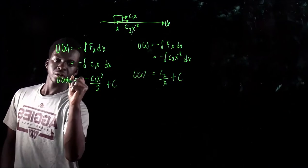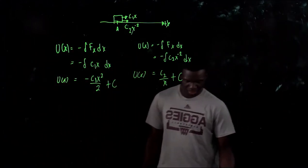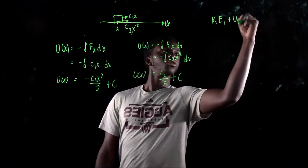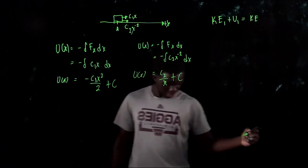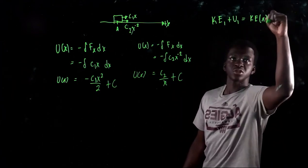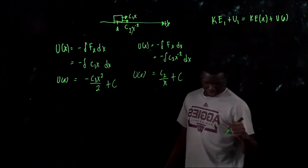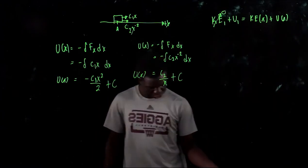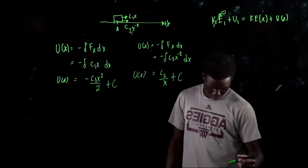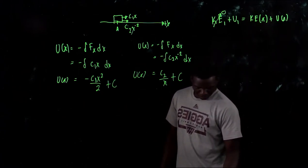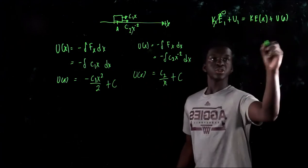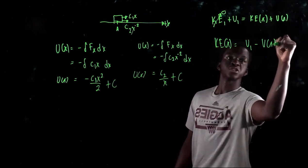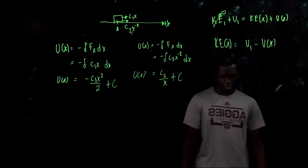The fact that we can find a potential energy function proves the forces are conservative. To find the kinetic energy as a function of x, we use conservation of energy: KE1 plus U1 equals KE(x) plus U(x). Since the object starts at rest, KE1 equals zero. So KE(x) equals U1 minus U(x).